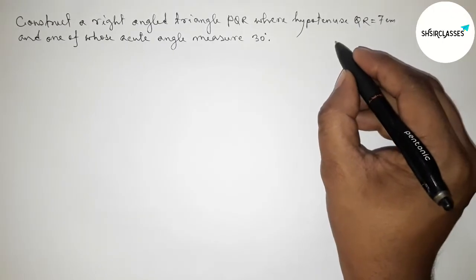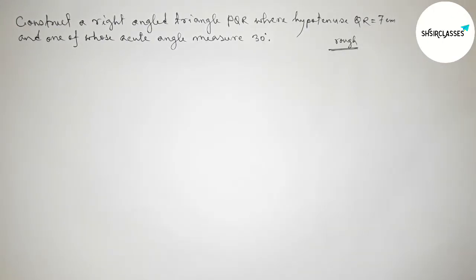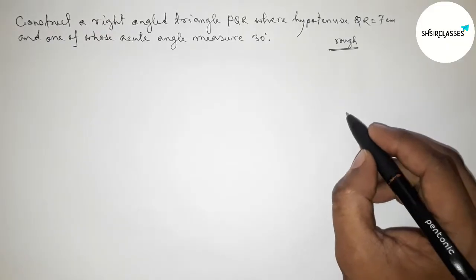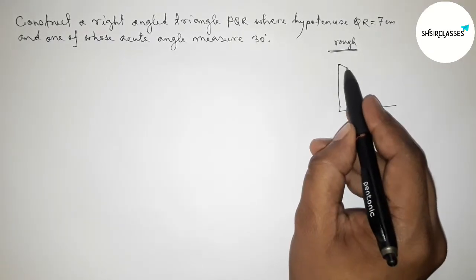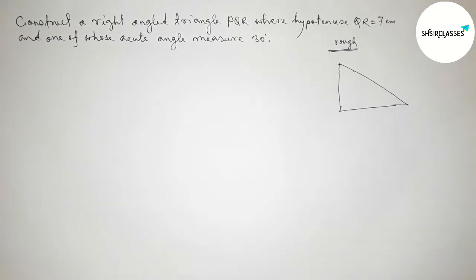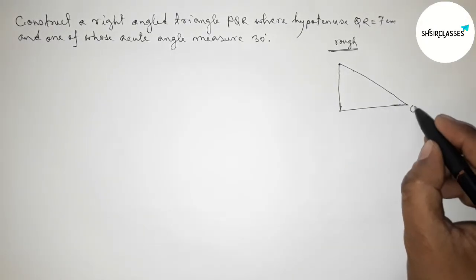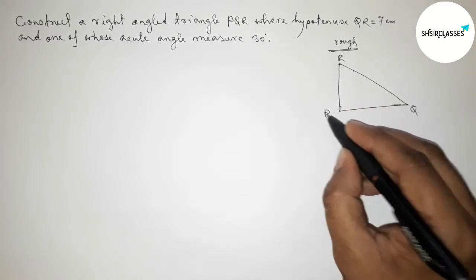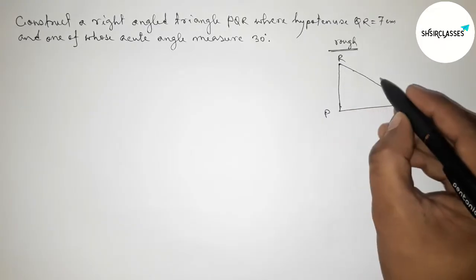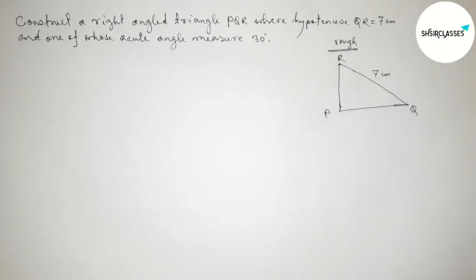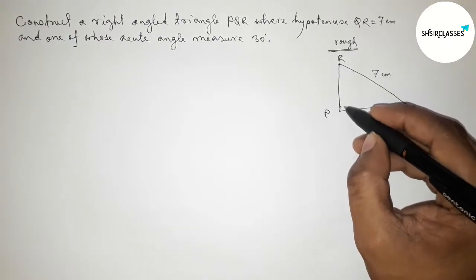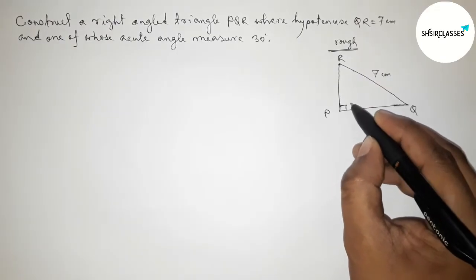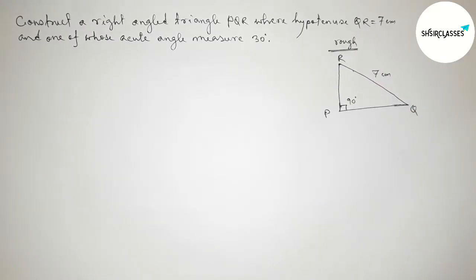First, roughly discussing some important calculations here. Drawing a right angle triangle roughly — taking point Q here, R here, and P here. The hypotenuse QR equals 7 centimeters. We know that the angle opposite to the hypotenuse is always 90 degrees.